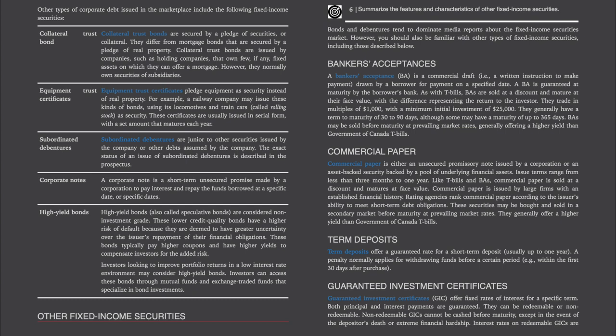Commercial paper is either an unsecured promissory note issued by a corporation or an asset-backed security backed by a pool of underlying financial assets. Issue terms range from less than three months to one year. Like T-bills and BAs, commercial paper is sold at a discount and matures at face value. It is issued by large firms with an established financial history, may be bought and sold in a secondary market before maturity, and generally offers a higher yield than Government of Canada T-bills.